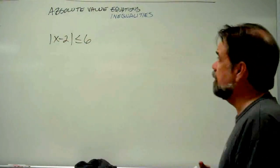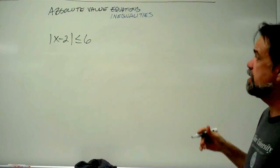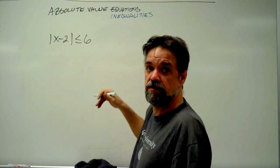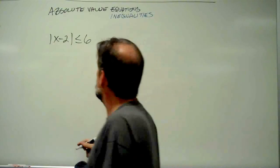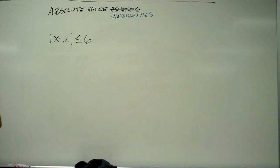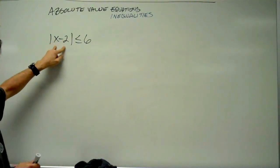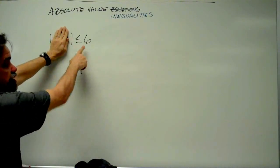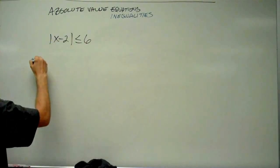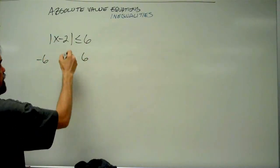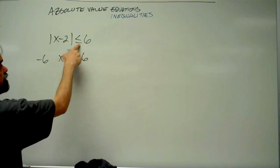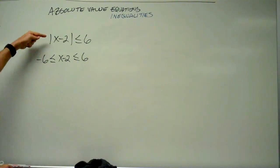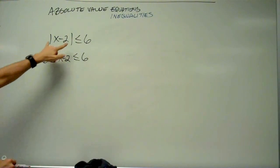If this were an equation, we'd say whatever's inside can be either negative 6 or 6, and split into two equations. But with this inequality, we said when the absolute value of something is less than a number, whatever's inside has to be between negative 6 and 6. So: negative 6 is less than or equal to x minus 2, which is less than or equal to 6 — including both endpoints. That way you lose the absolute value.